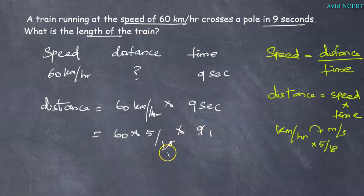9 goes into 18 two times, 2 goes into 60 thirty times. That gives 30 times 5, which equals 150.